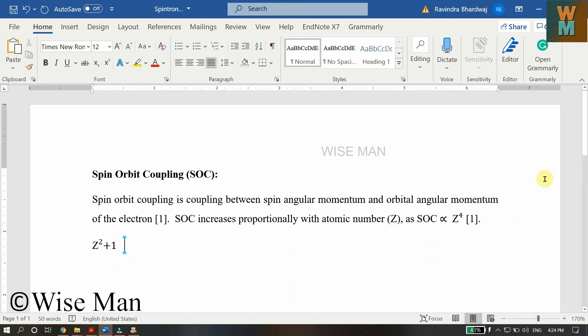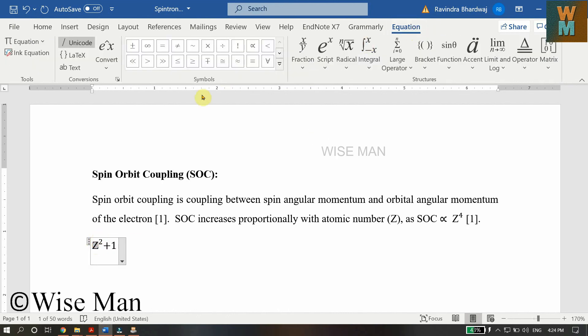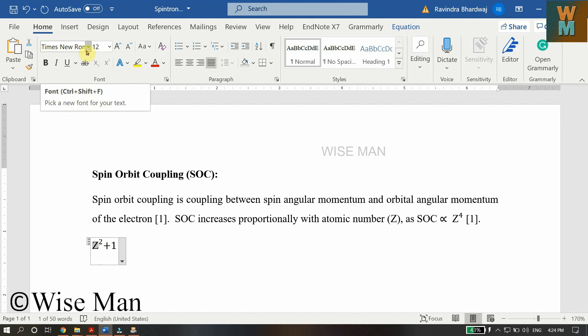So it's a very simple trick. You just need to select the whole equation or select that particular alphabet, go to Equation and be sure to enable this text option, then you can just go to Home and select whatever font style you want for your equation.